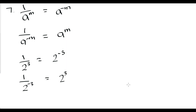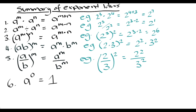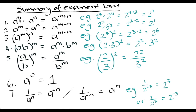To summarize all the laws: the multiplication rule states that when we have a base raised to an exponent multiplied by that same base raised to a different exponent, we write down the base and add the exponents — only when we have a common base. The division rule also requires a common base: when our base is raised to a power divided by that same base raised to a different power, we write down the base and subtract the exponents.